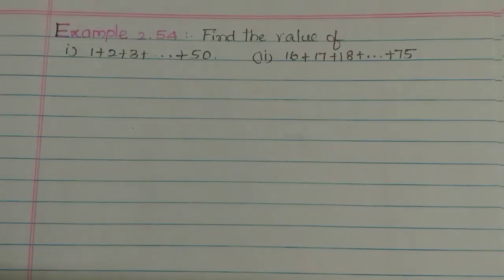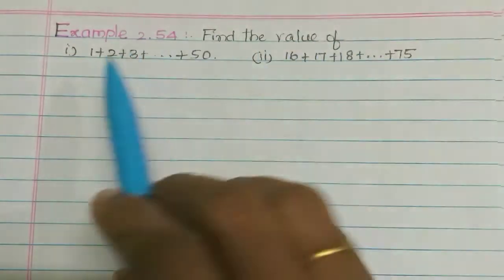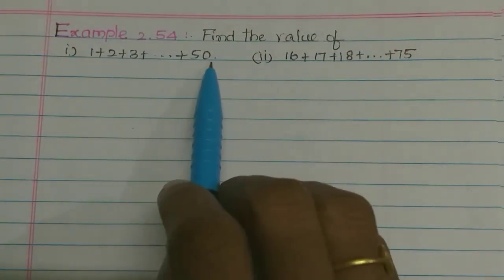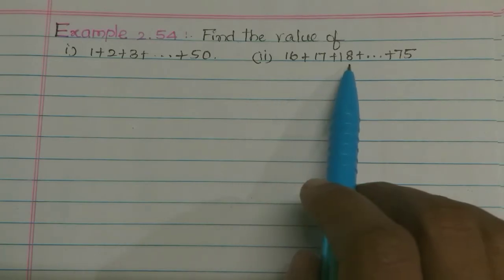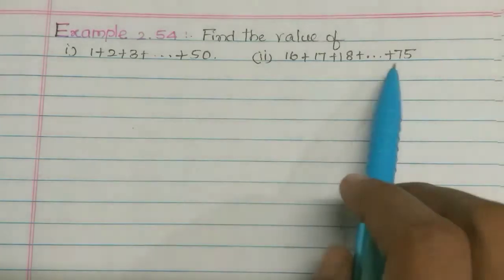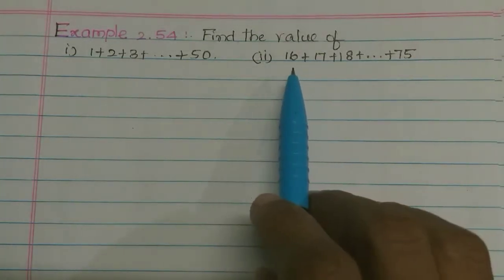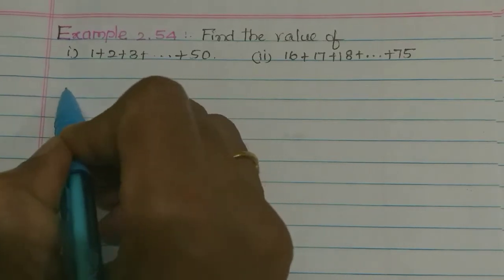Hi students. In this video we will see example 2.54. We need to find the value of 1 plus 2 plus 3 plus etc up to 50, and 16 plus 17 plus 18 plus etc up to 75 in the second subdivision. So we will solve the first subdivision.